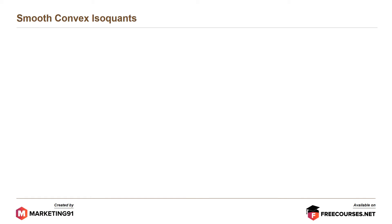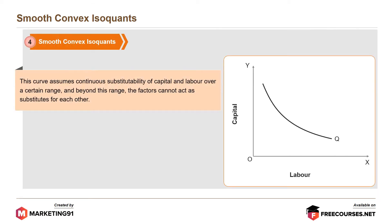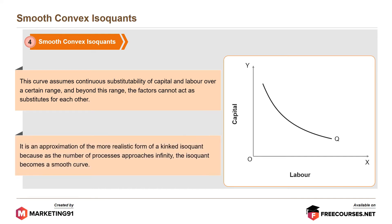Moving on to smooth convex isoquants. This curve assumes continuous substitutability of capital and labor over a certain range, and beyond this range the factors cannot act as substitutes for each other. It is an approximation of the more realistic form of a kinked isoquant because as the number of processes approaches infinity, the isoquant becomes a smooth curve.